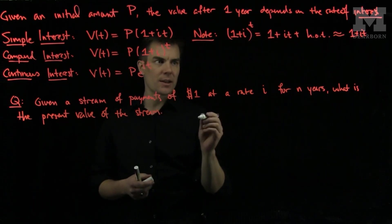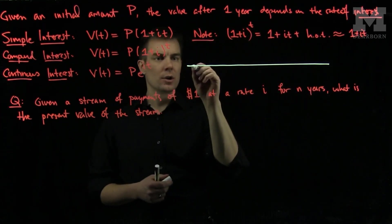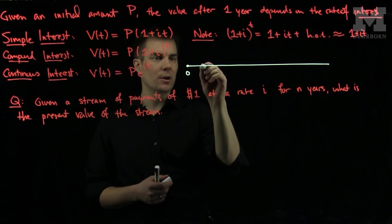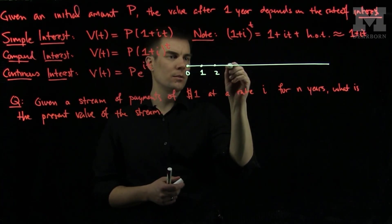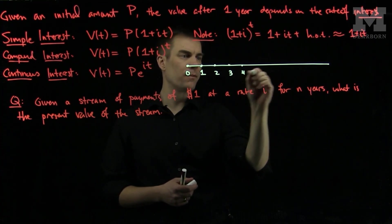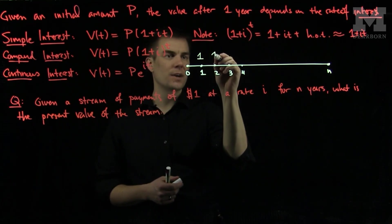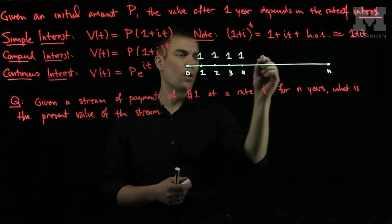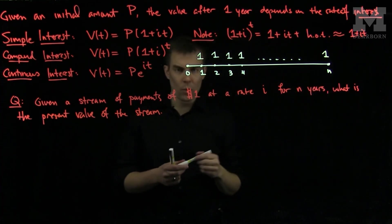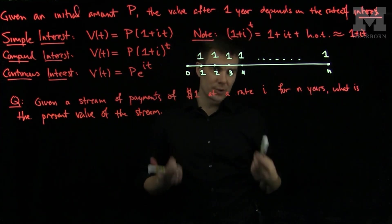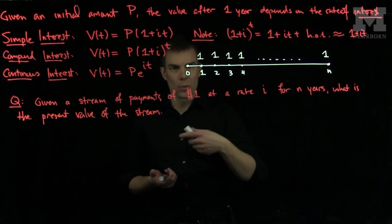What this question is asking is that there is a stream of payments. Right now we're at time 0, then we have time 1, time 2, time 3, time 4, all the way up to time n. At each of these moments of time, we are given $1. Now, $1 a year from now, $1 two years from now, $1 three years from now, are not worth what they would be worth at time 0.